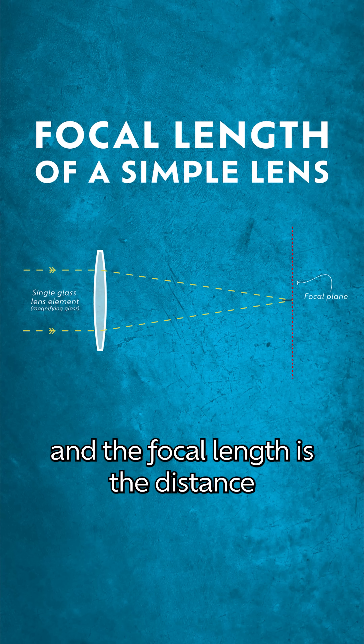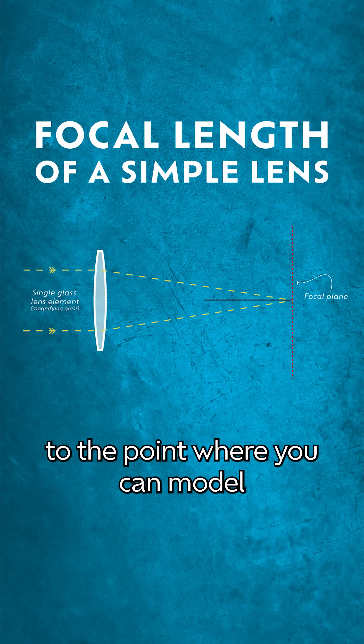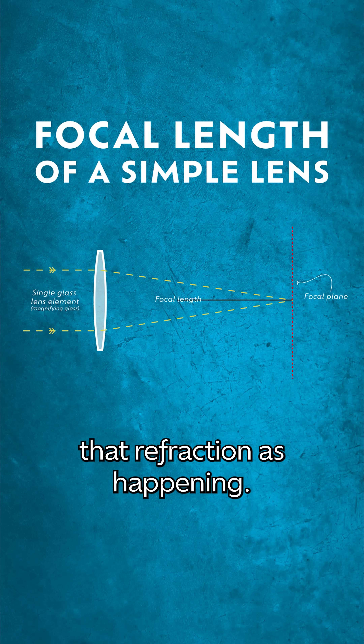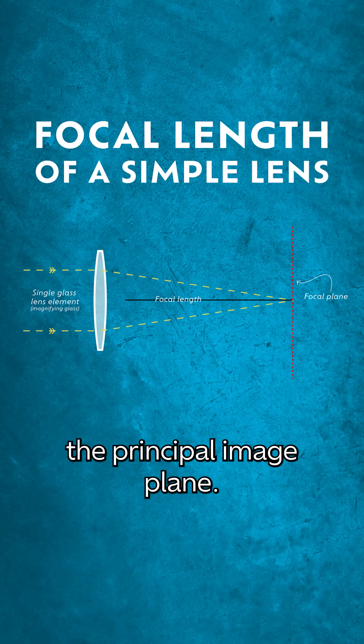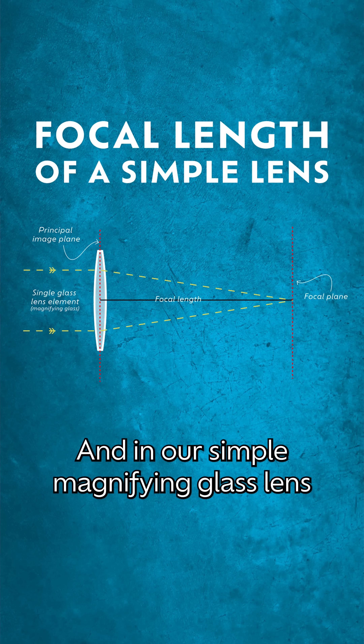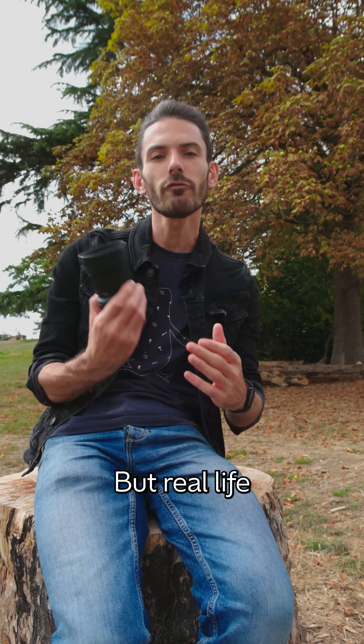The focal length is the distance from that focal plane to the point where you can model that refraction as happening, and that's called the principal image plane. In our simple magnifying glass lens, that's the middle of the lens.